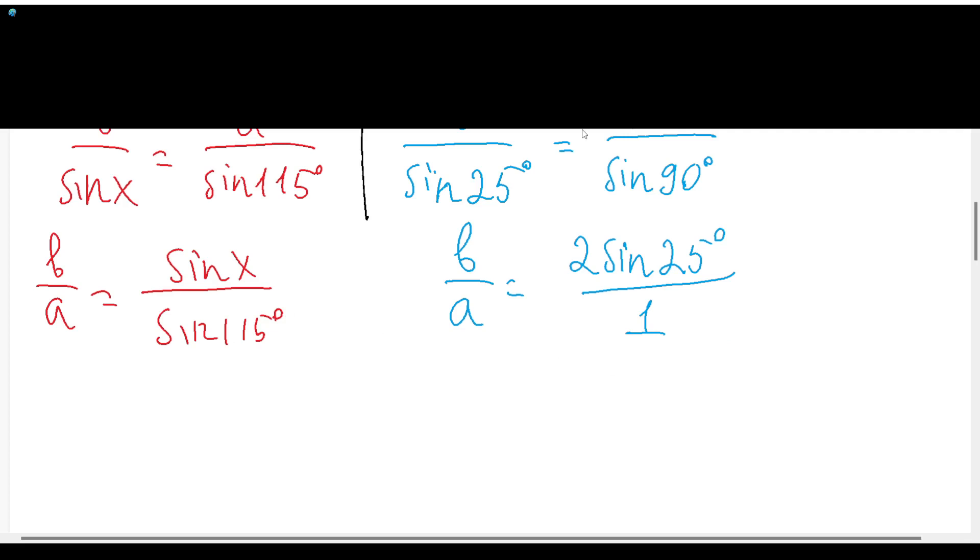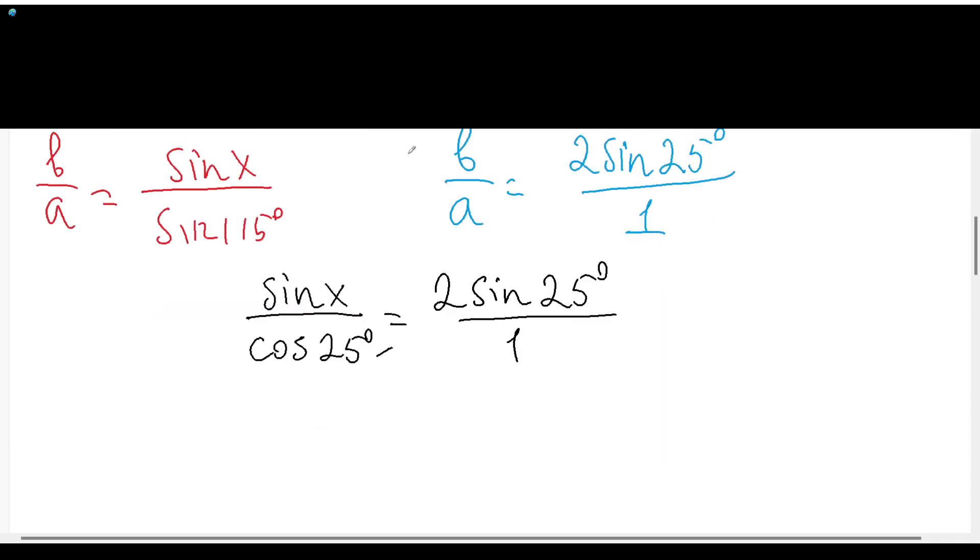And we can say that these expressions will be equal to each other. If we will write down that they are equal, so sin(X) over sin(115°), we can write sin(115°) as cos(25°), and it will be 2 sin(25°) over 1. We can just multiply both sides by cos(25°) and we will get sin(X) will be equal to 2 sin(25°) cos(25°).